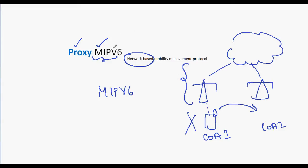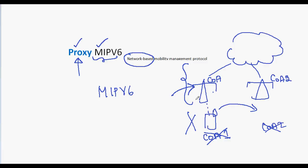So how can we achieve Mobile IPv6 as a network based mobility management solution? The idea is to use one of the elements in the network as a proxy for the mobile node. That network element acts as a proxy, and the care-of address will not be assigned to the mobile node. Rather, the care-of address will be held by the proxy — which may be the access router. So Proxy Mobile IPv6 is a Mobile IPv6 solution where one network element acts as a proxy for the mobile node.